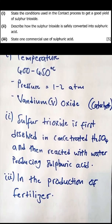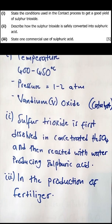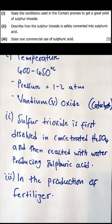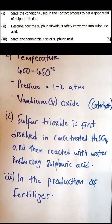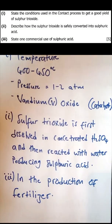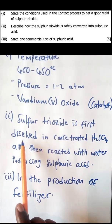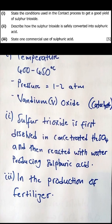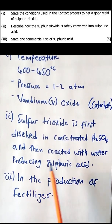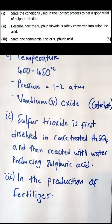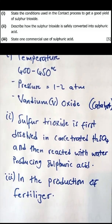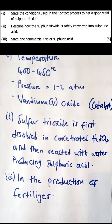Question 2: describe how sulfur trioxide is safely converted into sulfuric acid. You do not simply add water directly — that is why the question specifies 'safely converted.' First, the sulfur trioxide must be dissolved in concentrated sulfuric acid, and then it is reacted with water to produce sulfuric acid safely.